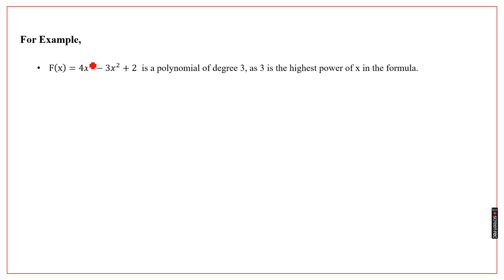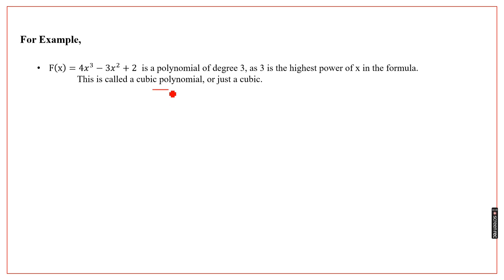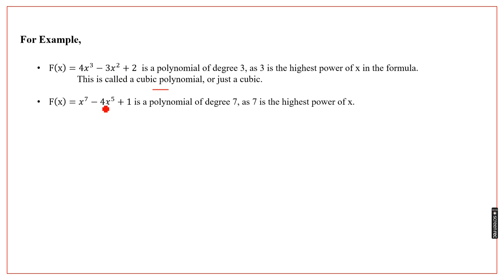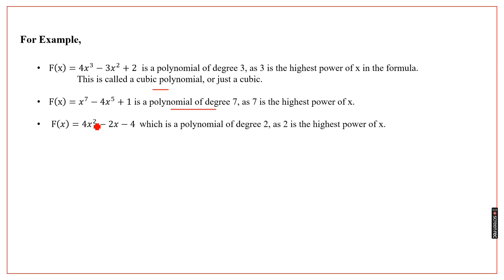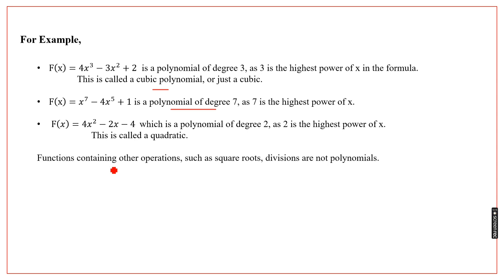For example, x³ − x² is a polynomial of degree three — three and two are both present, but the highest power is three, so it is a cubic polynomial. The expression x⁷ − 4x⁵ + 1 is a polynomial of degree seven, since seven is the highest power of x. For x², since the highest power is two, the function is called a quadratic function.